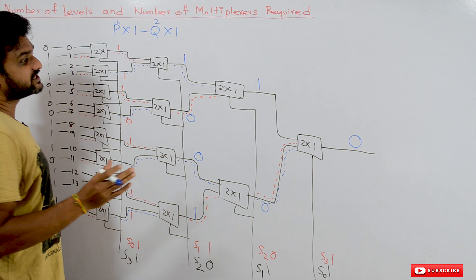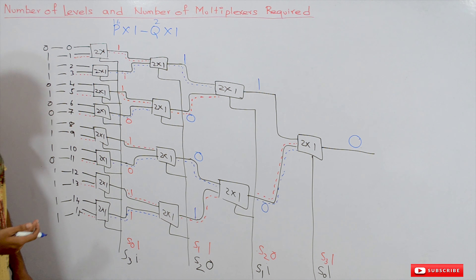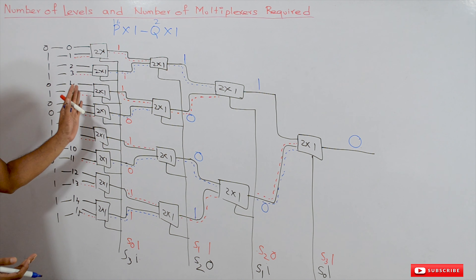The frequently asked questions are: how many multiplexers are used in order to design a p by 1 multiplexer using a q by 1 multiplexer? Here the value of p is 16 and the value of q is 2, which means a 16 by 1 multiplexer designed using 2 by 1 multiplexers. We need to find the number of multiplexers used and the number of levels used. We will try to understand the mathematical logic behind this diagram.